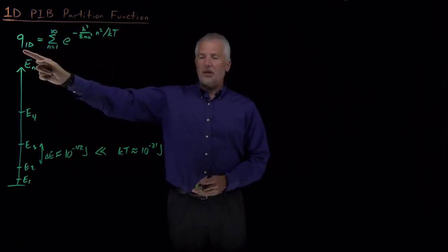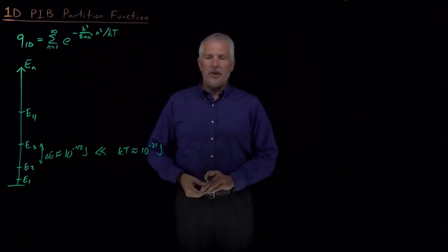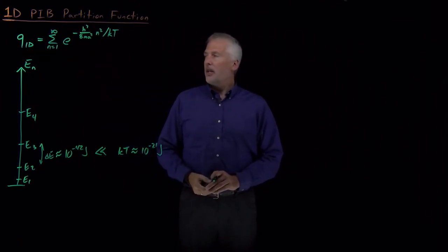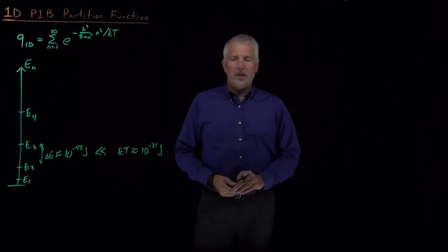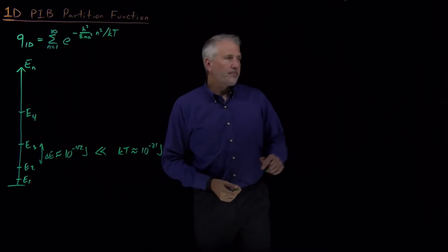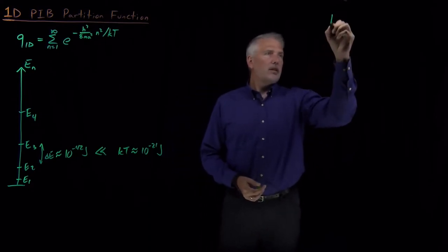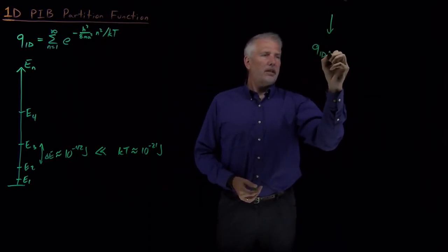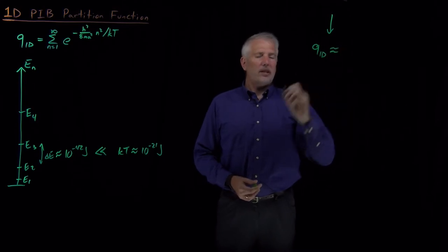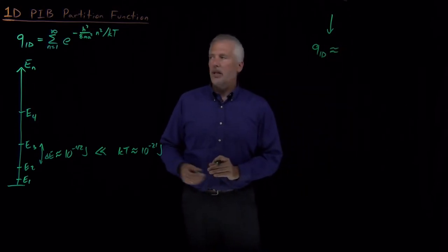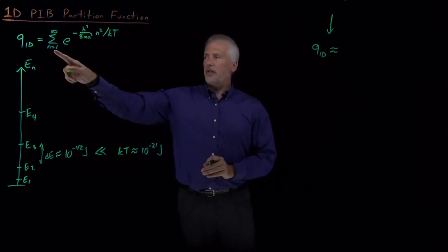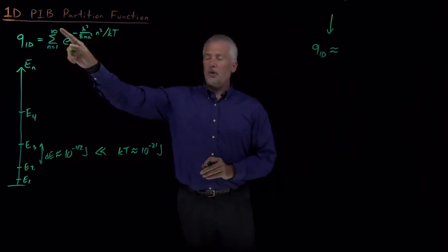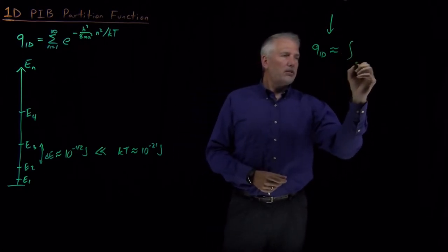The answer to how many terms are important — how large n must get before the energy is large compared to kT — is quite a few. A very large number of energy levels are going to be populated, so the partition function is going to be very large. That also means we can approximately treat this not as an infinite sum from 1 to infinity, but as an integral.